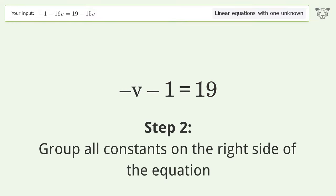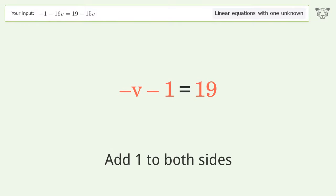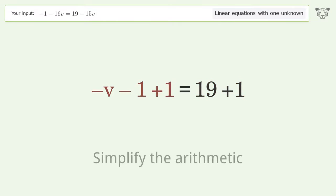Group all constants on the right side of the equation. Add 1 to both sides. Simplify the arithmetic.